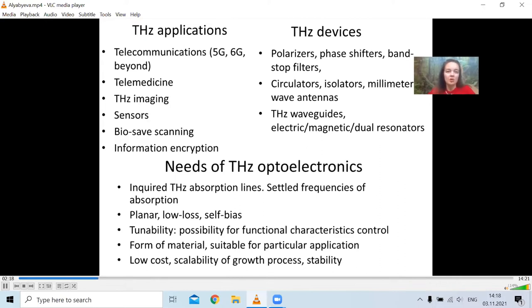If, again, we talk about telecommunications, your device is supposed to be planar, low-loss and self-biased. It is nice if your material allows you to tune its functional properties by using some external influences like pressure, temperature and other fields.